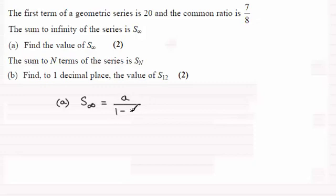For this example here, the first term is 20, so a is 20. This is divided by 1 minus the common ratio which is 7/8. If you work this out, you've just got 20 divided by 1/8 which gives 160.